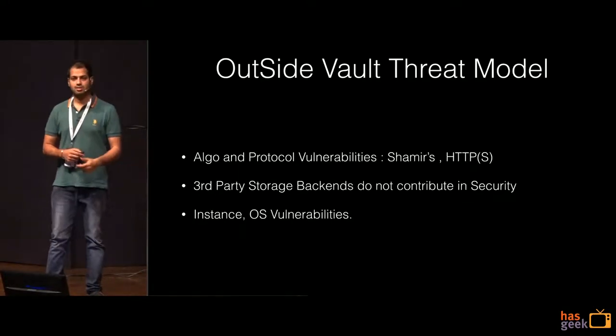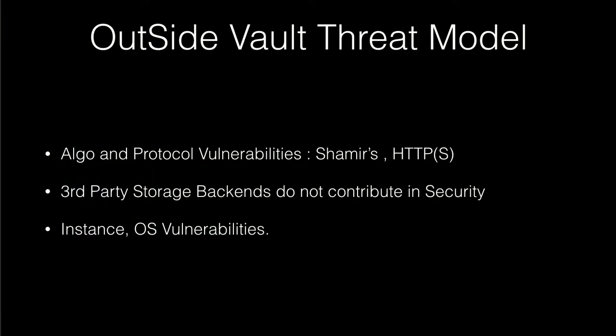These are things outside Vault's threat model — it's not a single system to secure everything. Shamir's algorithm is the algorithm used to separate keys into multiple parts. HTTP and OS instance vulnerabilities are obviously outside the threat model. If somebody runs away with your hard drive, that is also outside Vault's threat model. That's all there is to it — let me know if you have any questions.